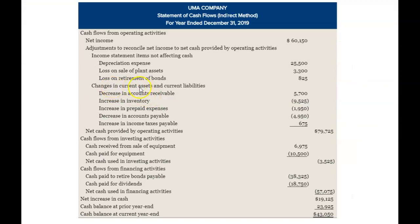So what's next? Changes in current assets and current liabilities — I think you know how to handle those. Go ahead and type this line in, then put in all your changes in current assets and current liabilities as shown on the balance sheet for Gazelle. Then calculate your net cash provided by operating activities. Once you've finished that, start the video again to check your work.